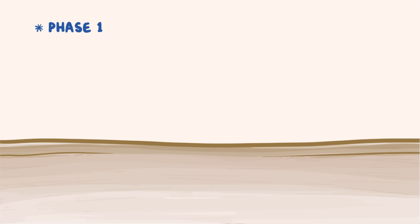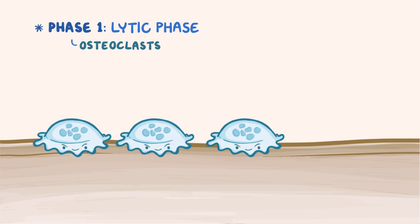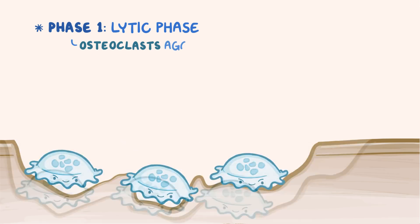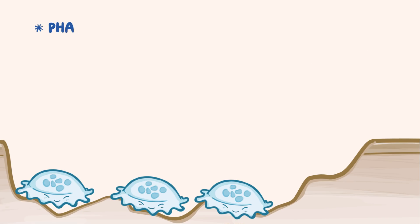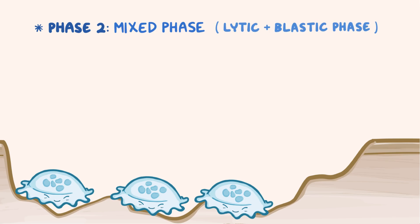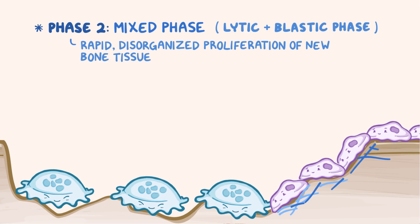There are three main phases to the disease. Phase 1 is the lytic phase, and that's where osteoclasts, which have up to 100 nuclei, start to aggressively demineralize the bone up to 20 times more than normal. Phase 2 is the mixed phase, and that's where the lytic phase occurs alongside the blastic phase. In the blastic phase, there's a rapid but relatively disorganized proliferation of new bone tissue by an unusually large number of osteoblasts.